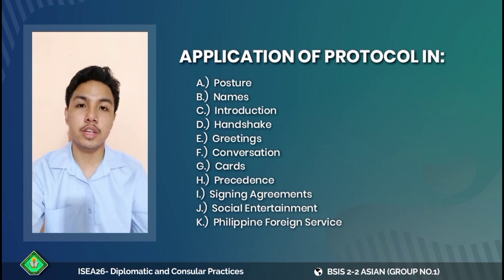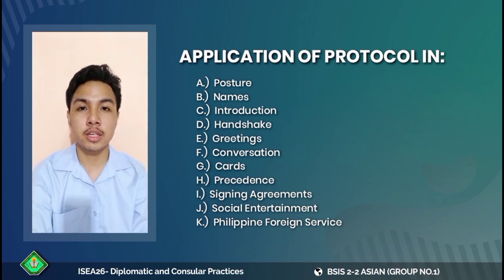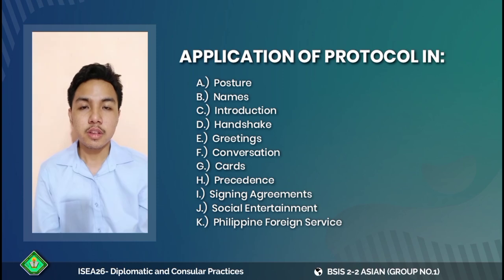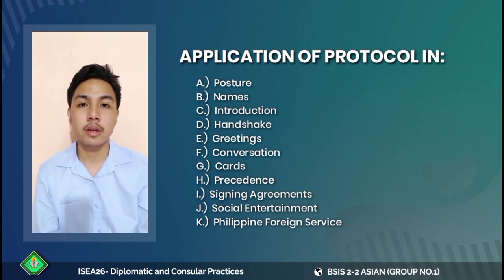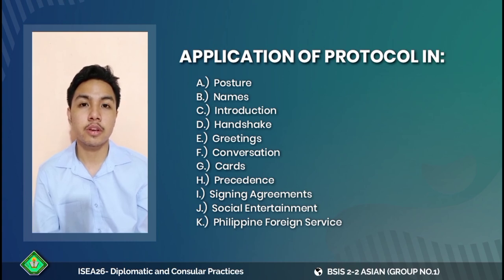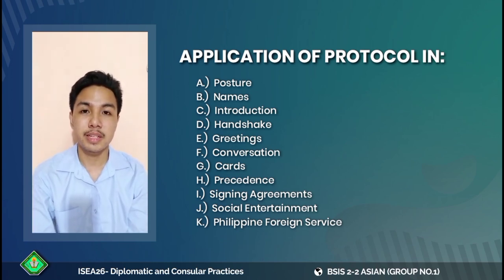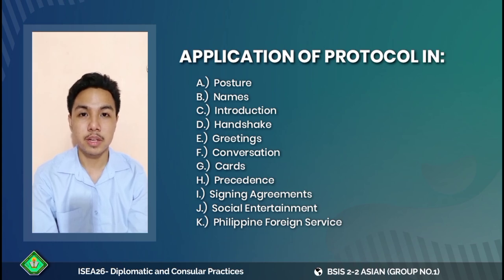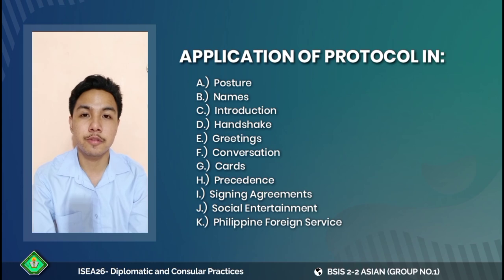Next is conversation — the actual exchange of words between two people, involving not just speaking but also listening. There is also protocol in making calling cards and business cards. In calling cards, you should only put your name and title. In business cards, you should put your name, title, address, and contact number, and there are rules for giving and receiving them. Next is precedence — the priority of place based on superiority of rank, observed by people of different ranks.